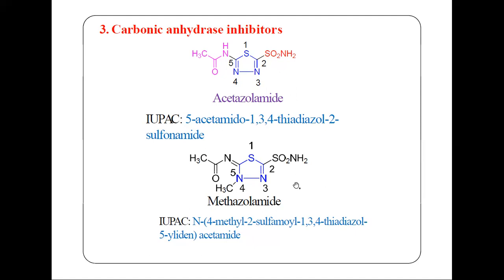So we call this: N4-methyl, 2-sulfamoyl. When we make the acetamide derivative, we have sulfonamide at the second position. Thus the name is: 4-methyl, 2-sulfamoyl, 1,3,4-thiadiazole, with a 5-ylidene group — because there is a double bond between carbon and nitrogen at that position.